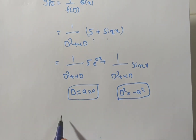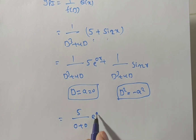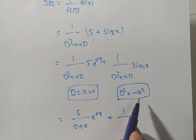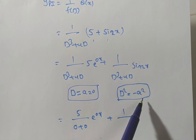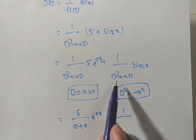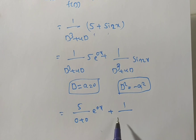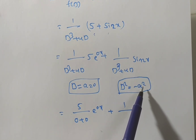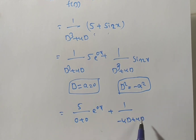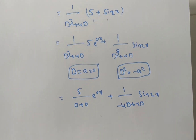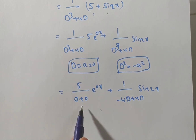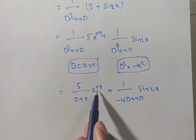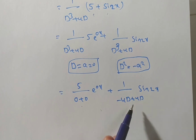Replacing D by a = 0 for the first term: f(0) = 0³ + 4·0 = 0. The denominator is 0, which means 0 is a root of the auxiliary equation. Similarly, for the sin(2x) term, replacing D² = −4: −4D + 4D = 0, so the denominator is also 0. In both cases, 0 is a root.